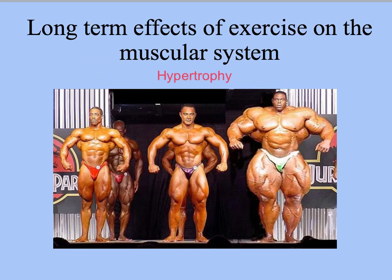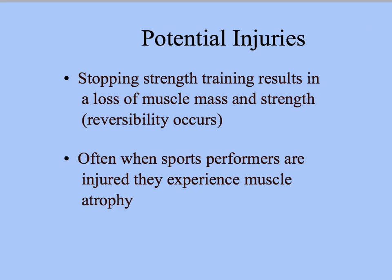As muscular strength increases, so does muscular endurance and power, because power equals strength times speed. The long-term effects produce a firmer looking body, better posture, and stronger tendons, which attach muscles to bones. However, when injury occurs and strength training stops, the principle of reversibility applies — adaptations are reversed, and we lose muscle mass and size. This is called muscle atrophy, the opposite of hypertrophy.